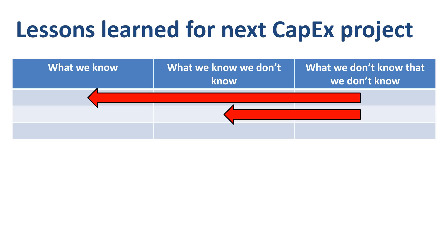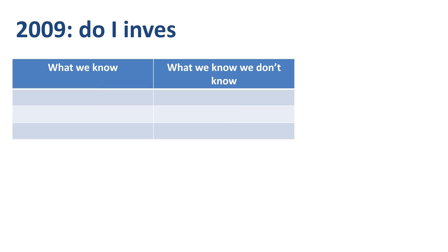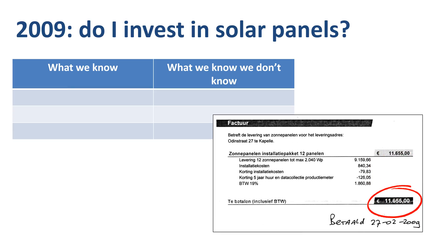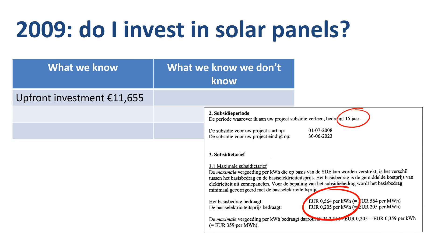Let me illustrate this with an example. Back in 2009, I asked myself: do I invest in solar panels? At the time this was fairly new technology, and the upfront investment for 12 solar panels including installation was €11,655. The government provided a 15-year subsidy paid in installments over the lifespan of the project, guaranteeing revenue at 56 cents per kWh generated, up to a maximum of just over 1,700 kWh per year.